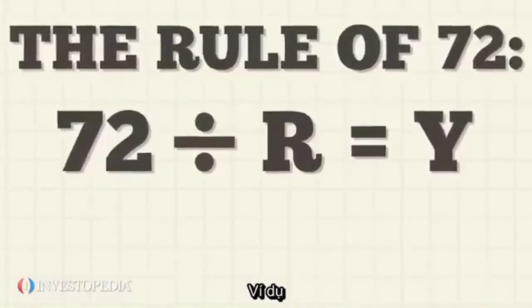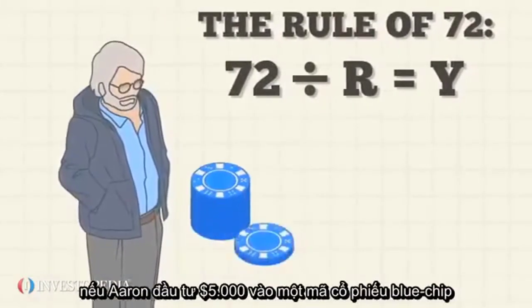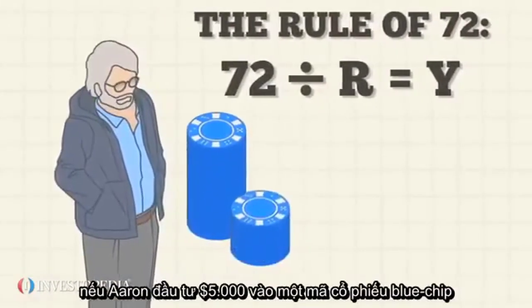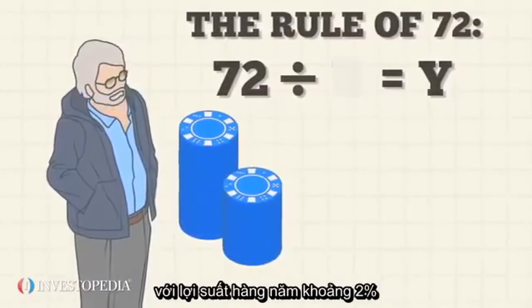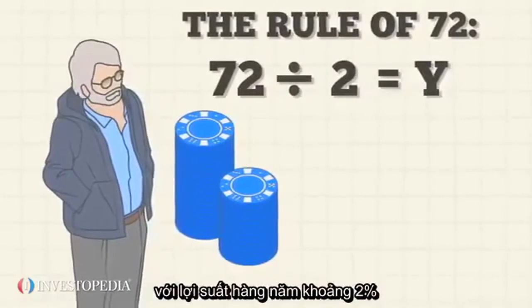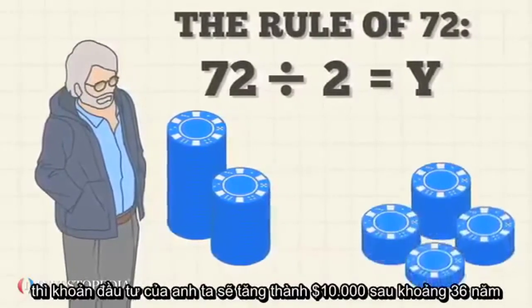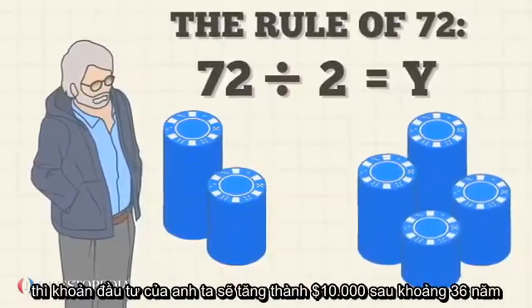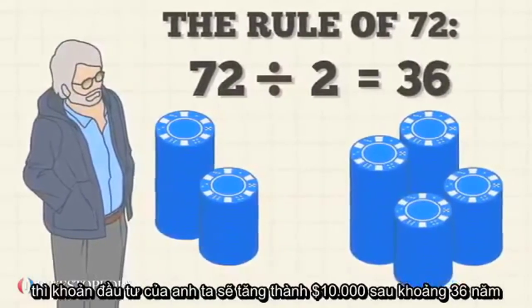For example, if Aaron puts $5,000 in a blue chip stock with an annual return of 2%, his investment will grow to $10,000 in roughly 36 years.